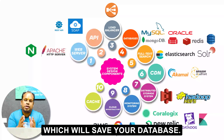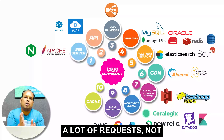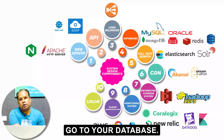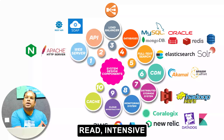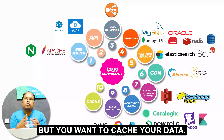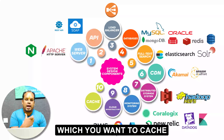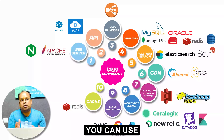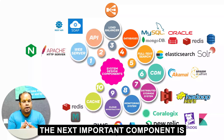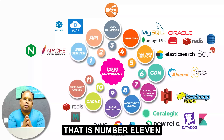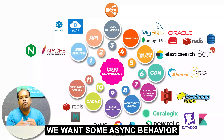Number ten is cache. Cache is something that will save your database. If you want to avoid too many requests hitting your database — maybe your application is highly read-intensive or write-intensive — you want to cache your data. You can use Redis or Memcache for caching.